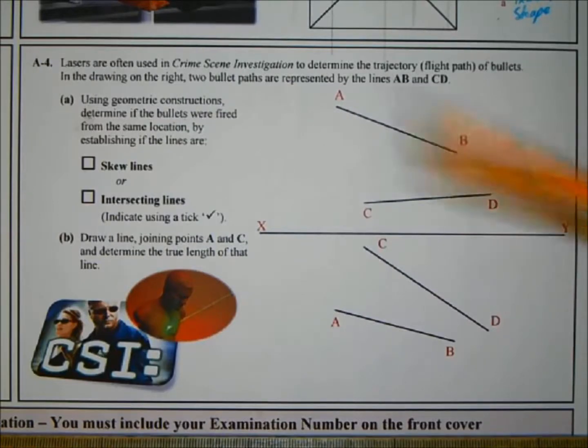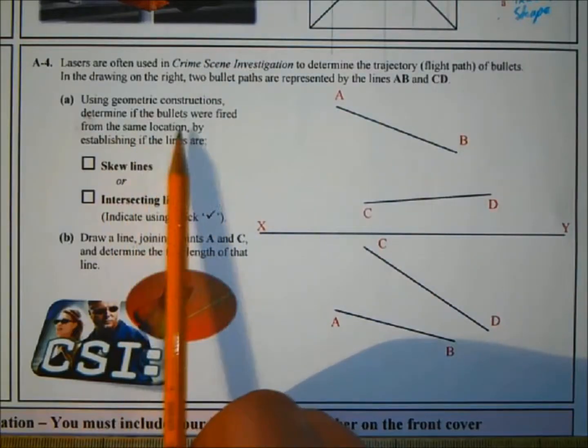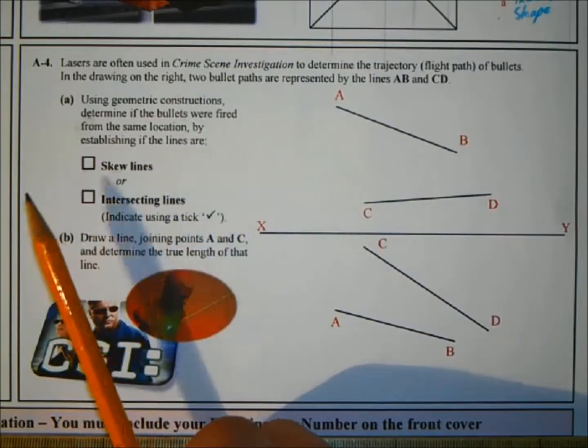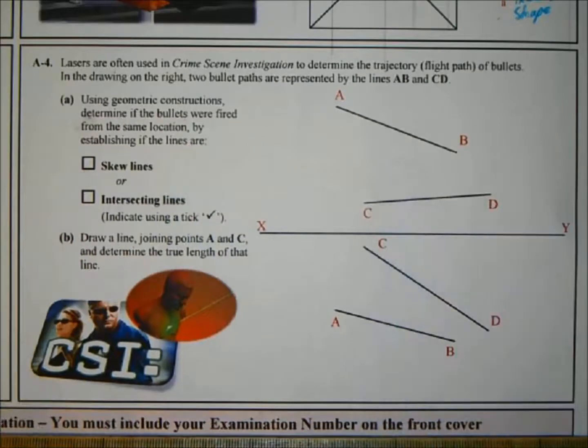So they kind of give you a clue in the question. Determine if the bullets are fired from the same location by establishing if there are skew lines or intersecting lines. We don't know they're intersecting lines because they're not crossing.